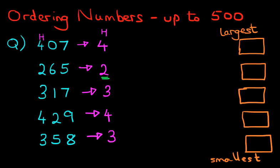Now which of these is the smallest? The smallest one is two, and two is on its own. So therefore we can write down this number right now, and the number is two hundred and sixty-five. That is the smallest number — two hundred and sixty-five — and the reason why it's the smallest is because it has two hundreds, while all the other numbers have either three hundreds or four hundreds. So we have filled in one of the boxes.